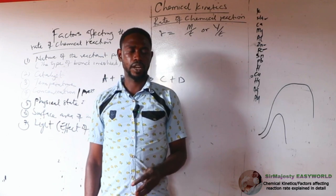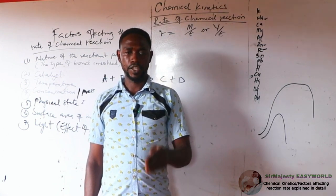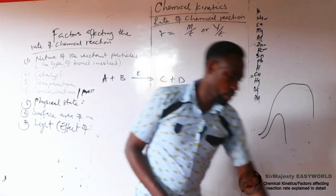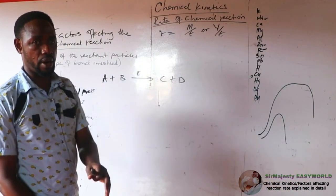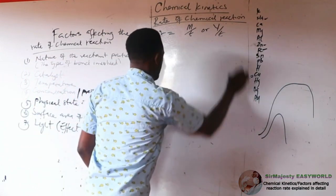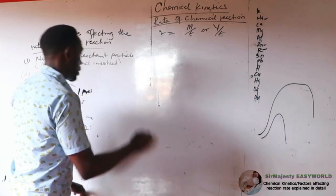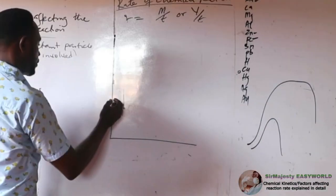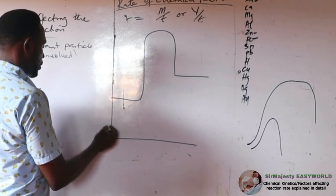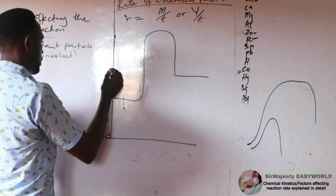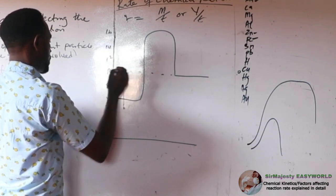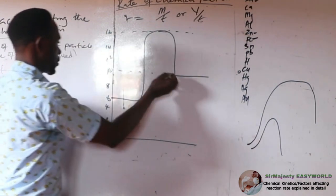A catalyst alters the rate of a given reaction by affecting the activation energy, either by making it higher or lower. To illustrate this, we use an energy profile diagram. For an endothermic reaction, the activation energy is the energy difference from the enthalpy of the reactants to the activation complex — the peak of the diagram. Mathematically, activation energy equals the activation complex energy minus the enthalpy of the reactant.